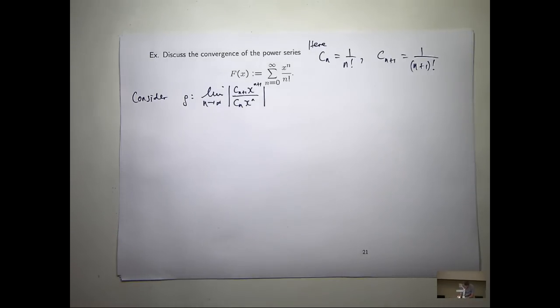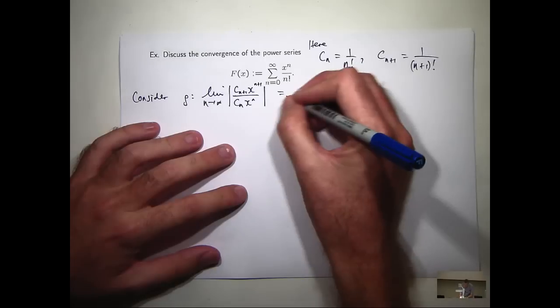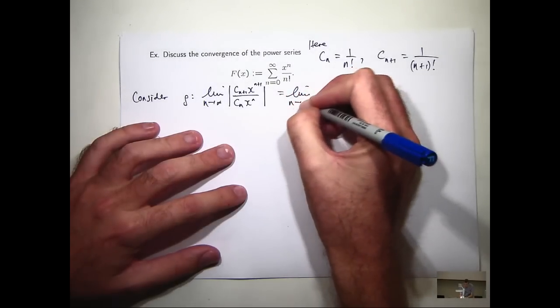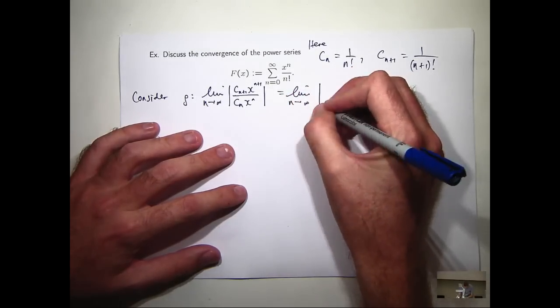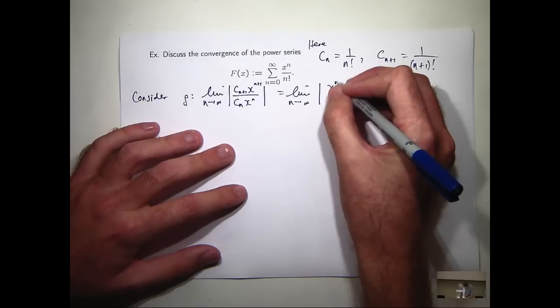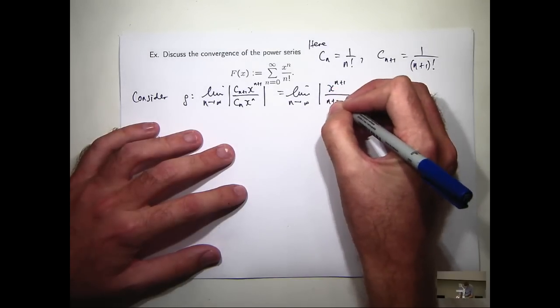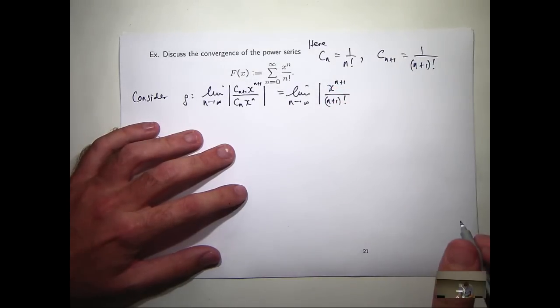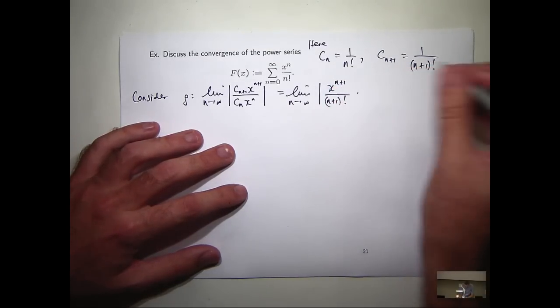A little bit of algebra is going to come into the mix here. We need to cancel stuff off. Now, because I'm dividing two fractions, I'm going to multiply by the reciprocal.